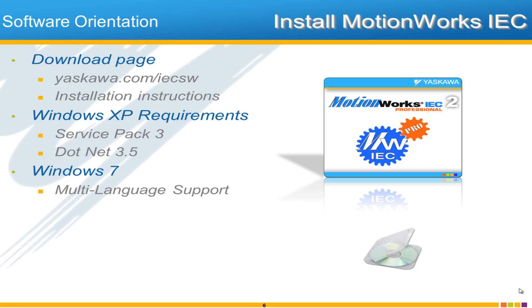To summarize some of the requirements — especially for Windows XP, it's common that the computer may not have Service Pack 3 or may not have .NET 3.5. .NET 3.5 is an additional piece of software used by many applications; you are likely to already have it especially if you have Windows 7, but in both cases you will need it and it's quite a hefty download. This is also explained in the installation instructions on the software page.